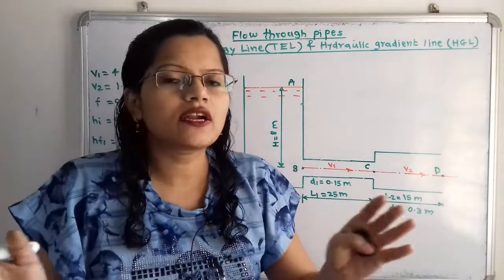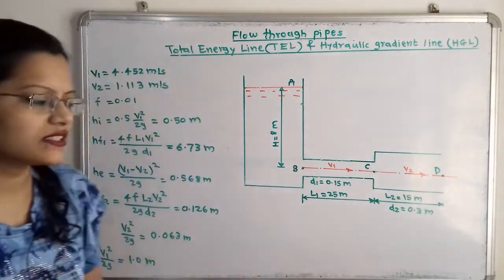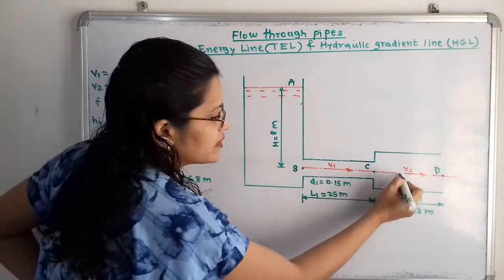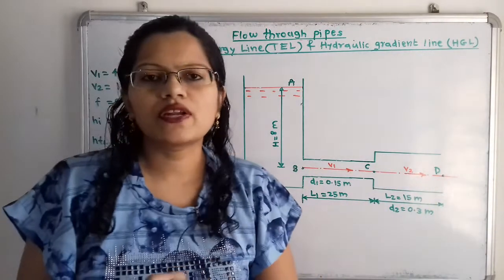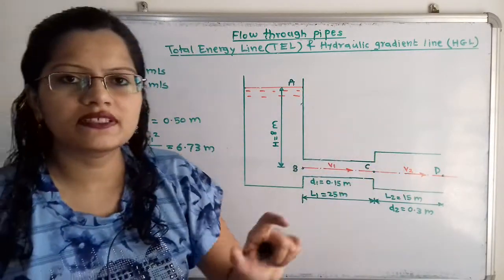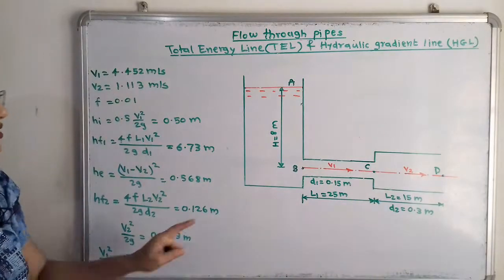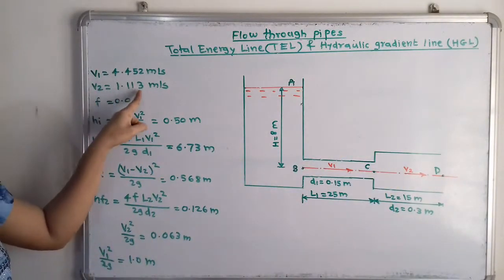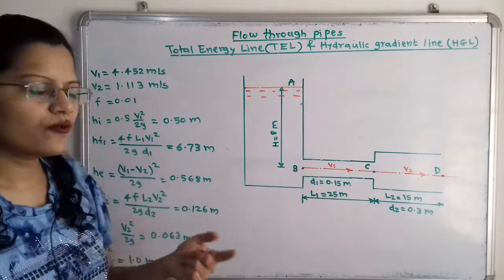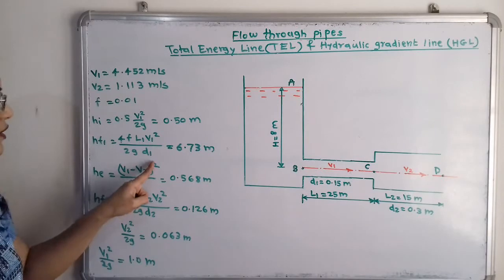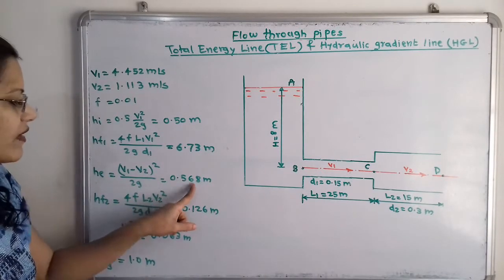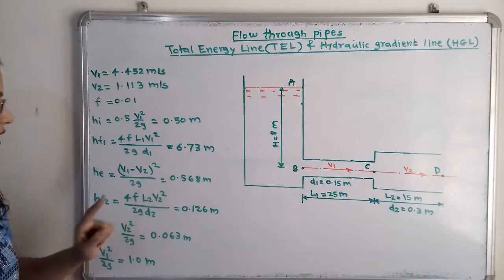At point C, water enters pipe two and there are losses due to sudden enlargement, he. In pipe one the velocity is v1 and in pipe two the velocity is v2, which are different because the cross-section areas differ. v2 = 1.113 m/s. The formula is: he = (v1 − v2)² / 2g, giving he = 0.568 meters.